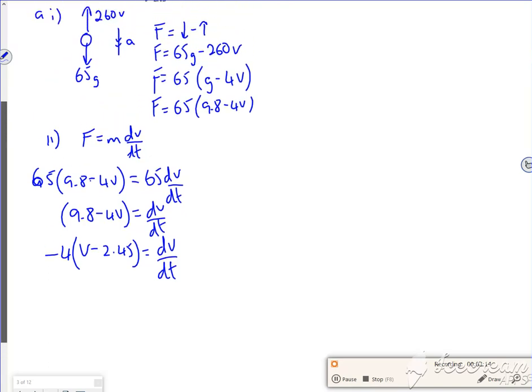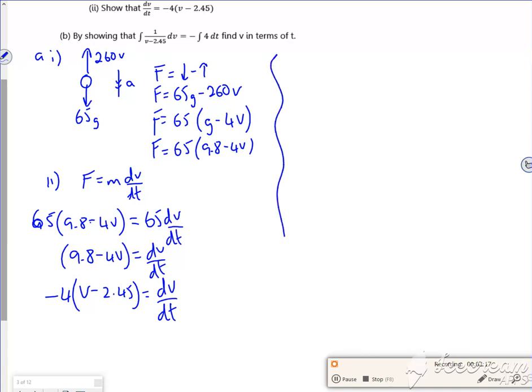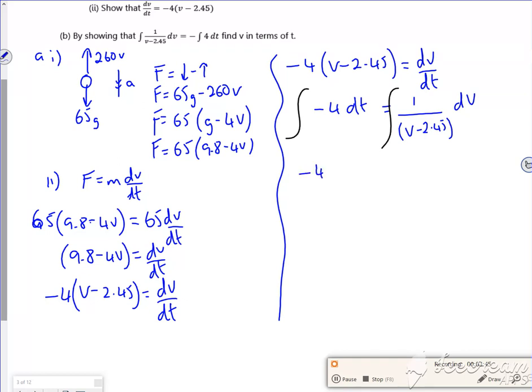So part B says by showing that that's the integral, find it. Right, so I've got minus 4(V minus 2.45) is dV by dt. Now V's on the top, the V needs to go over here. So (V minus 2.45)dV is minus 4dt. And I integrate both of them. So I've got minus 4T is equal to, now that's going to be a log, log of V minus 2.45 plus C.